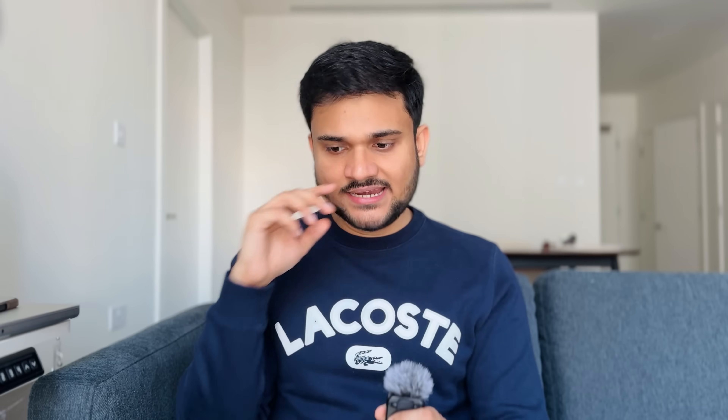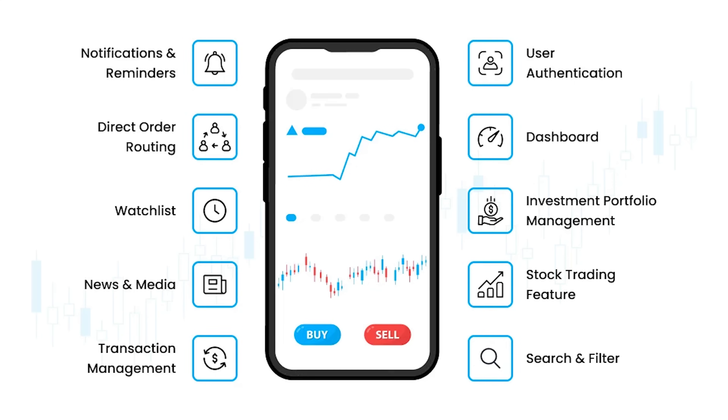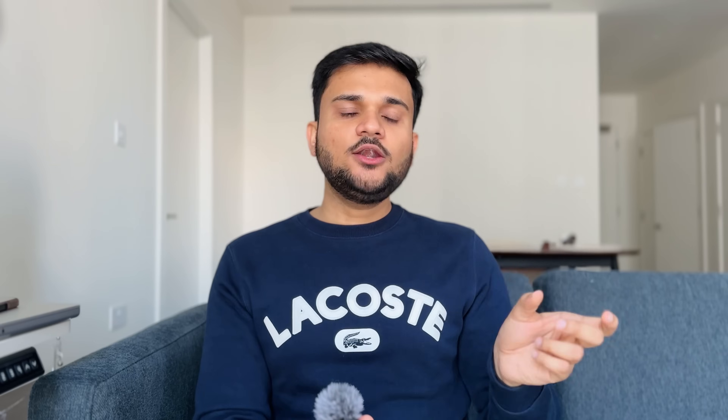Once SOLID principles are done, start digging around design patterns — but I do not like the idea of just memorizing 10 to 15 patterns and matching them to problems. Instead, start with practicing problems. For example, to learn the observer pattern, try a simple machine coding problem around a stock broker application. To learn the strategy pattern, pick a problem around a rule engine or stock exchange — these are actual problems asked in real LLD rounds. This gives you end-to-end practice and teaches the design pattern at the same time.